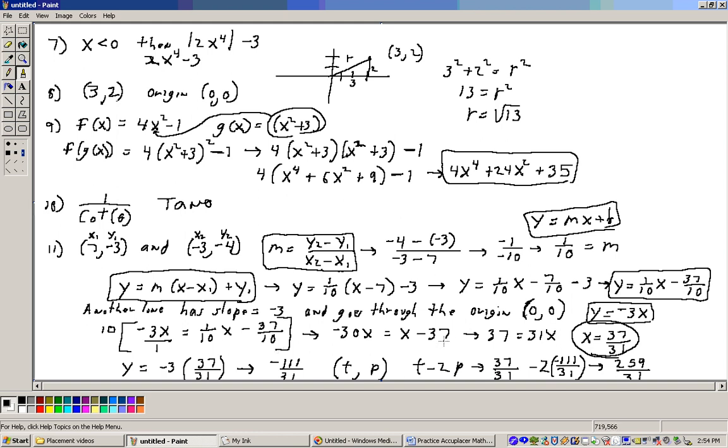Solving this, I took the minus 37 to the left and added 30x to the other side, giving me 37 equals 31x. If I divide by 31, then I get x equals 37 over 31.